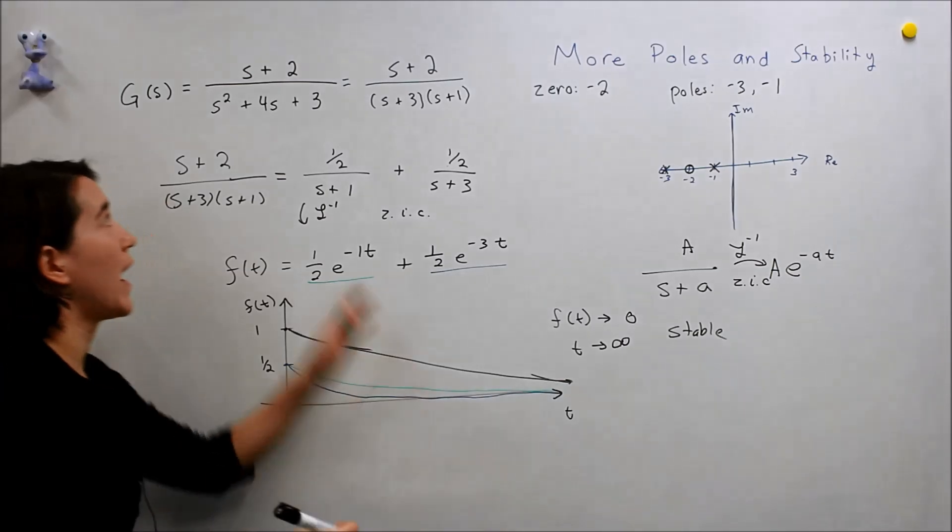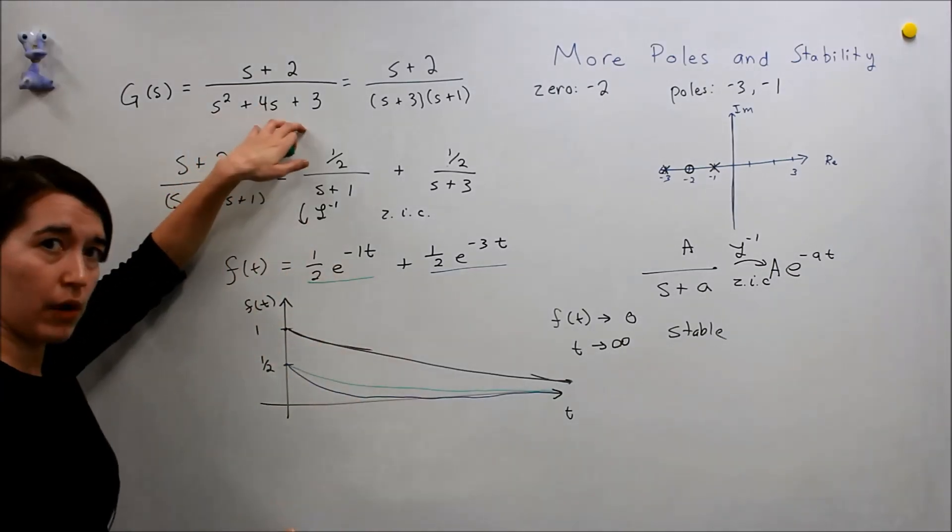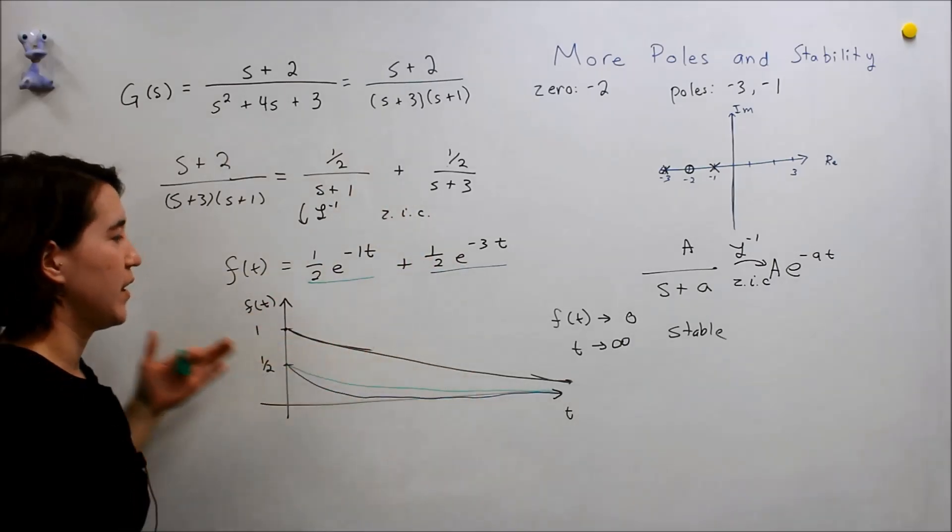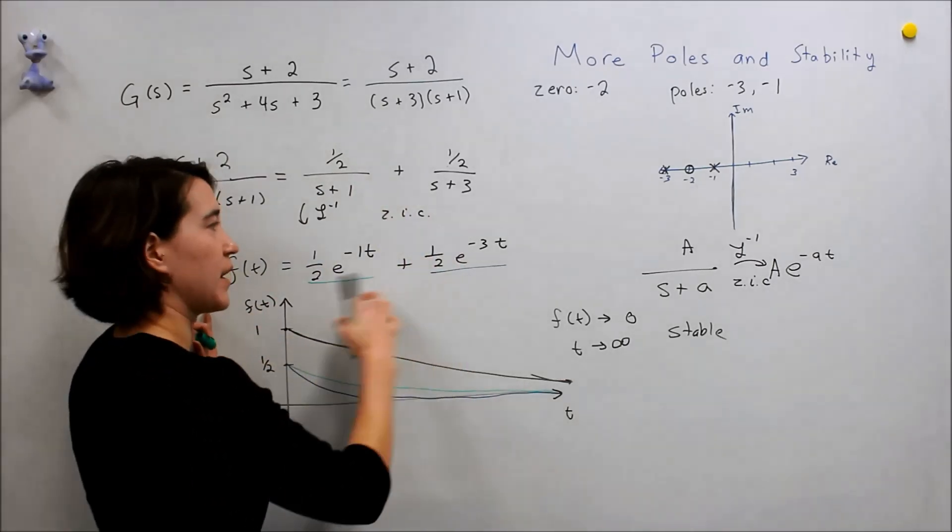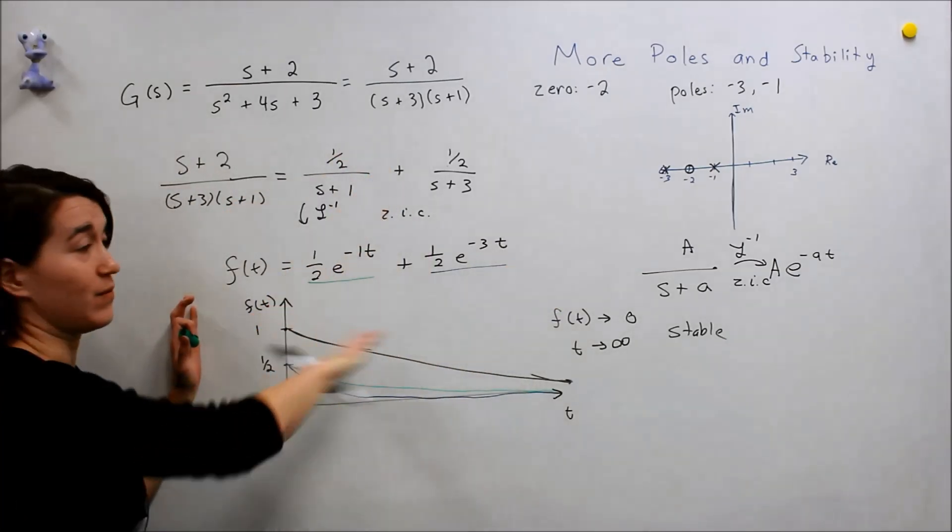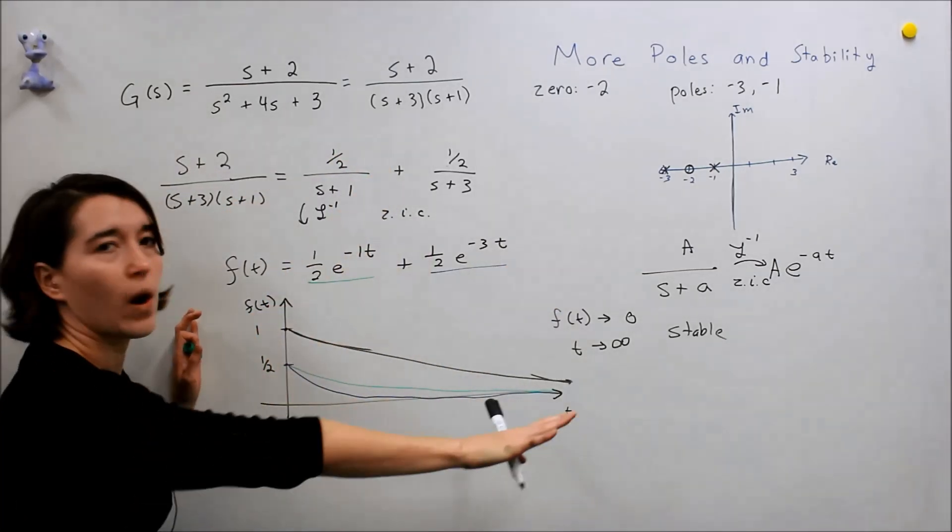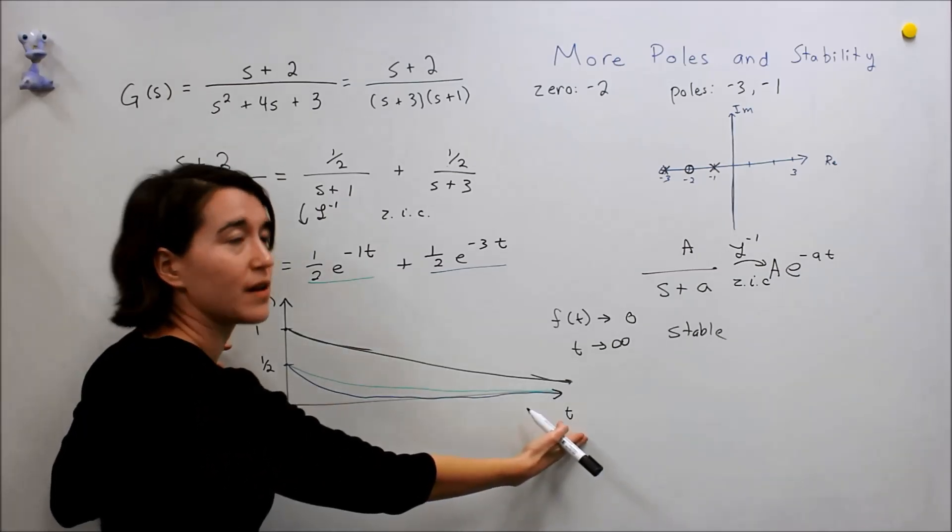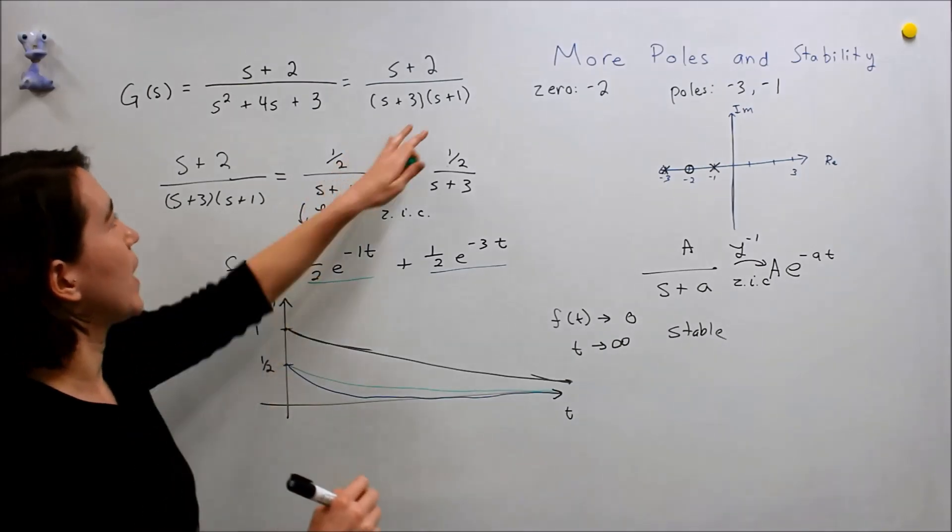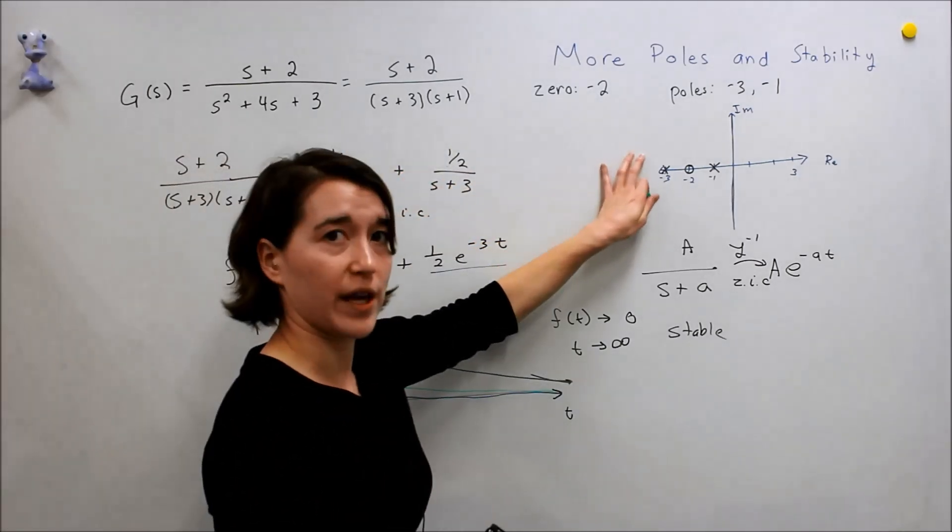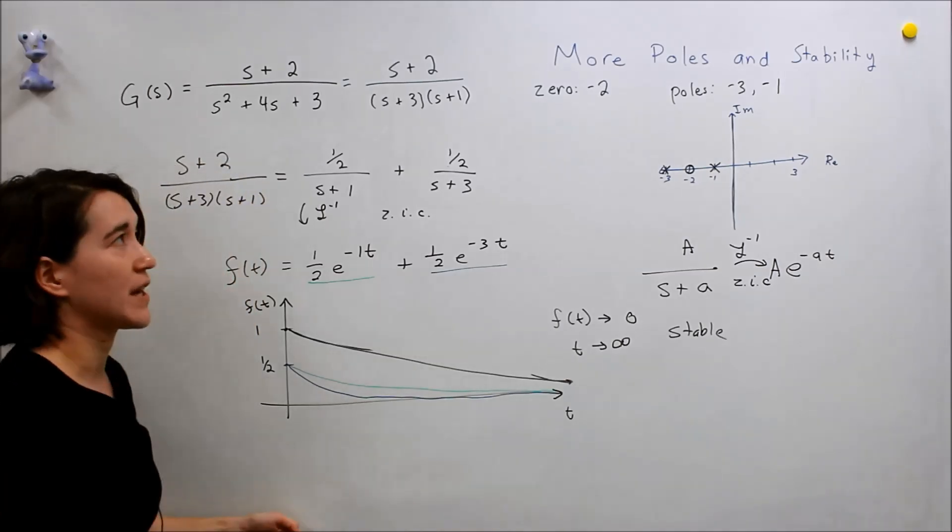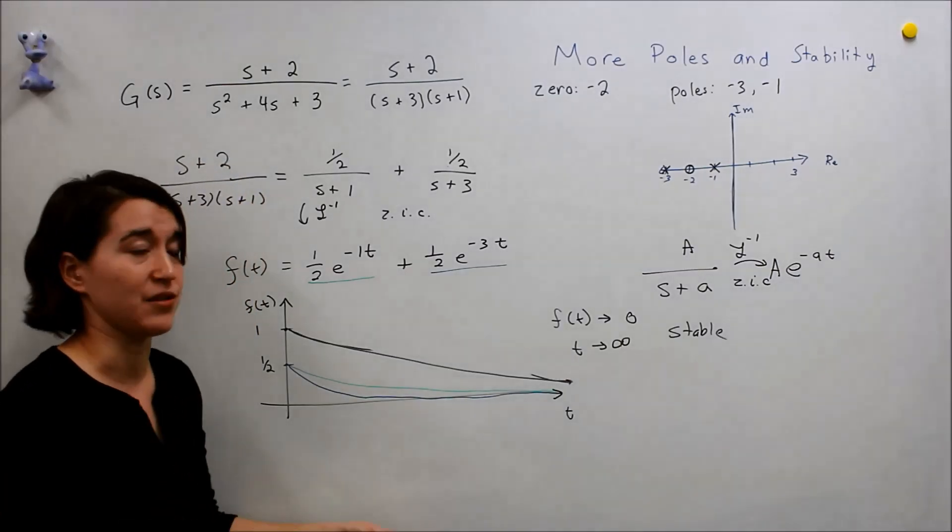If we have a proper transfer function and we have all negative poles, we will simply get a bunch of negative exponentials. Real negative poles. Then they will all go like this, and as time goes to infinity, the system will go to zero and it is stable. That's why when we have this kind of system and we have all negative real poles, we can say that the system is stable. Next, we'll look at a case where we are actually looking at imaginary ones.